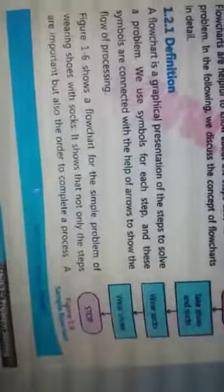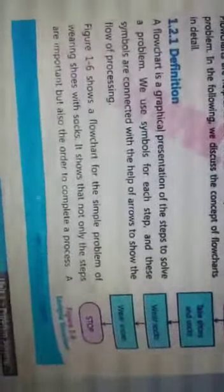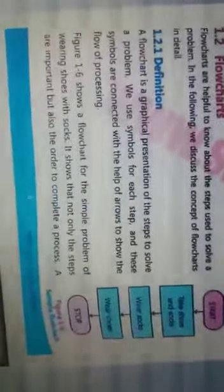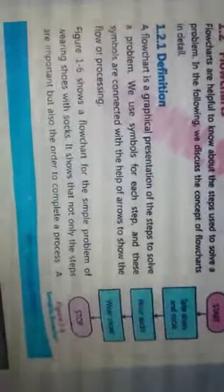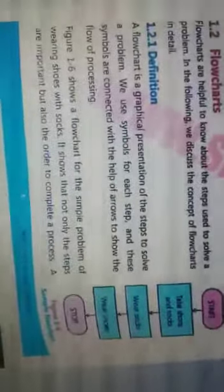In the figure, the problem given is wearing shoes with socks. To draw a flowchart for this problem: first we have Start and Stop symbols — I will explain all symbols in detail in the next lecture, including which symbols are for input, output, processing, and start/stop. In this flowchart: Start, then take shoes and socks, then wear socks first, then wear shoes — this entire process is represented in the flowchart.